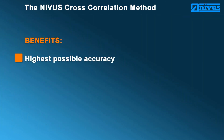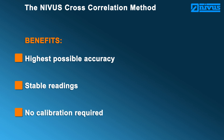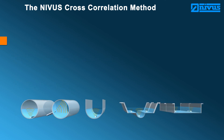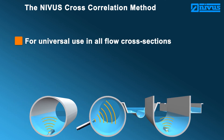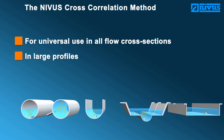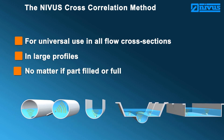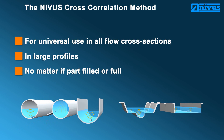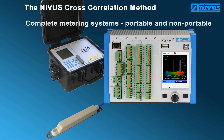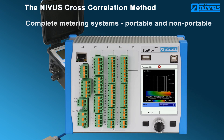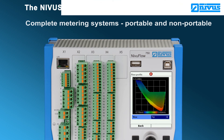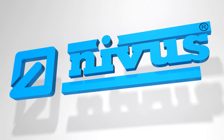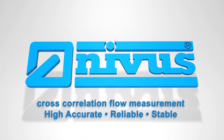The NIVUS cross-correlation method — an overview of the benefits: highest possible accuracy, stable readings, no calibration required. Our measurement system is for universal use in all flow cross-sections, in large profiles, no matter if part-filled or full. Portable and non-portable metering systems — NIVUS provides the perfect solution for each application. Our innovative systems stand for highest accuracy and reliability. NIVUS cross-correlation flow measurement: highly accurate, reliable, stable.